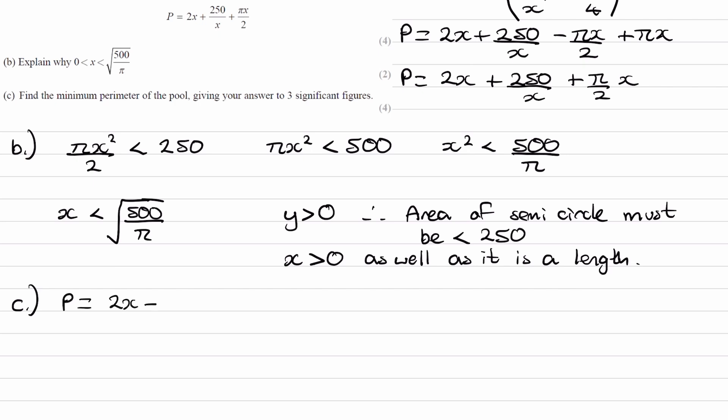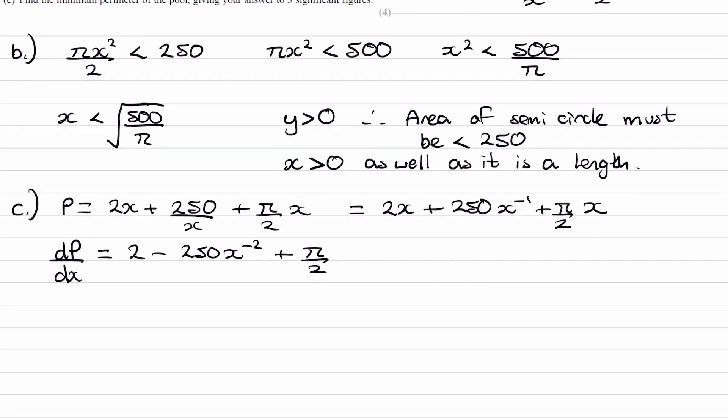The perimeter of the pool, we have the equation 2x + 250/x + π/2·x. We want to find the minimum perimeter of the pool. To minimize or maximize something, we usually differentiate. I'll first rewrite this as 2x + 250x⁻¹ + π/2 times x. And now when we differentiate this, we end up with 2 - 250x⁻² + π/2. If we want to find out when the perimeter is a maximum, that would correspond to when the rate of change of the perimeter would be 0. So when you have a turning point. Set this equal to 0.